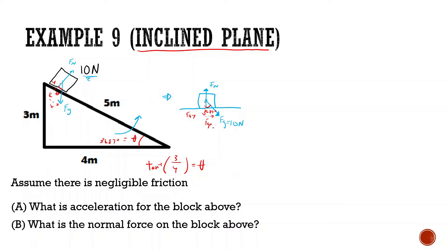Now that we have that, we can figure out the force of gravity in the x: 10 times sine of 36.87, and we get 6 — so that's 6 newtons. And the force of gravity in the y is 10 times cosine of 36.87, and we get 8. That should make sense because this is a 3-4-5 triangle times 2, giving us a 6-8-10 triangle.